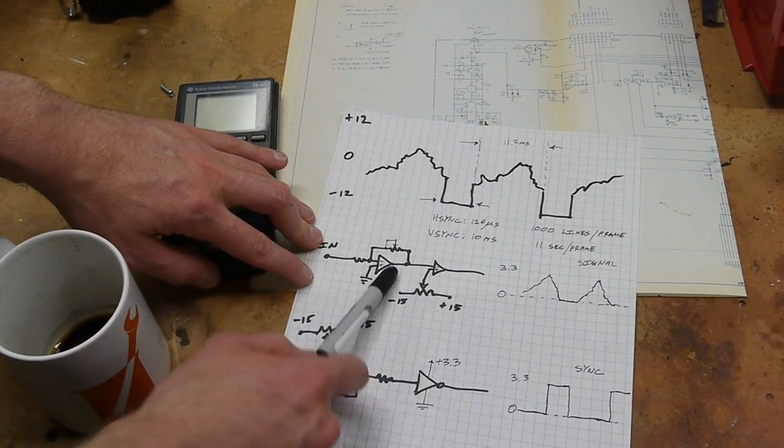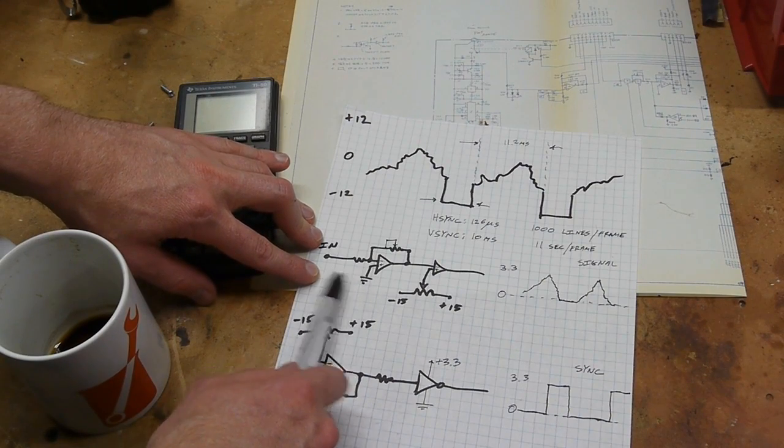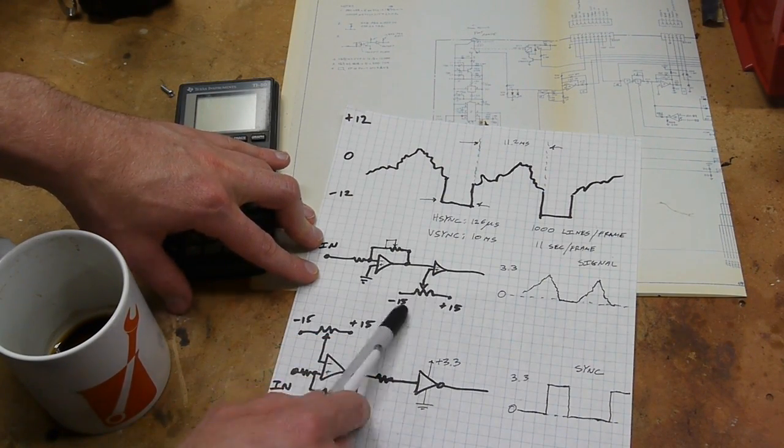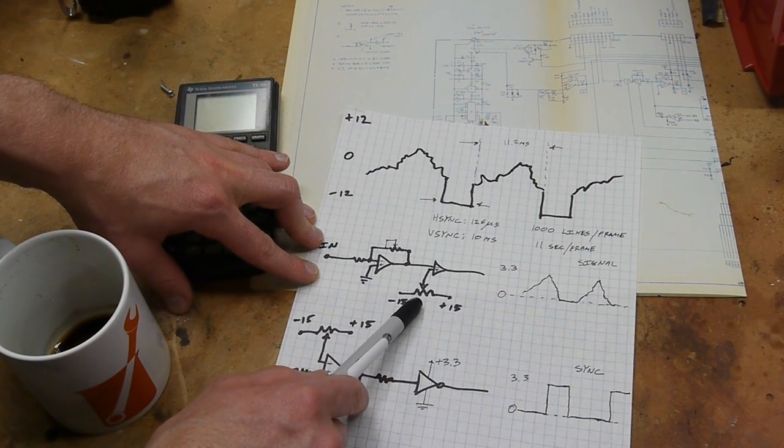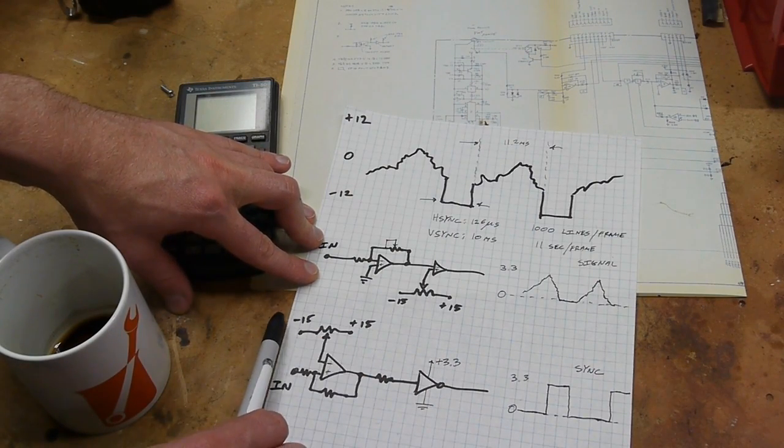This first op amp is set up as a reducer. Usually you configure op amp circuits to amplify signals, but in this case we're actually attenuating. Then the second op amp is an offset—if we put the positive input on a potentiometer from negative 15 to plus 15, we can dial up where we want the offset to be.